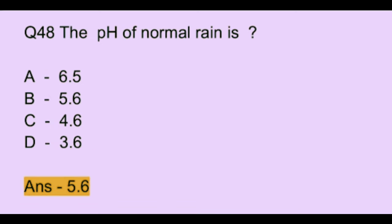Question number 48. The pH of normal rain is: Option A: 6.5. Option B: 5.6. Option C: 4.6. Option D: 3.6. The correct answer is option B, which is 5.6.